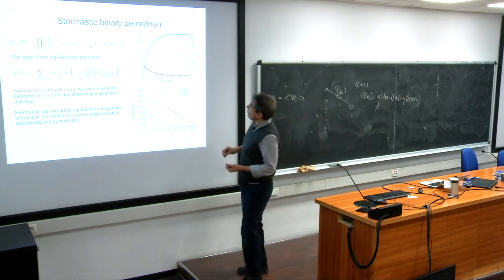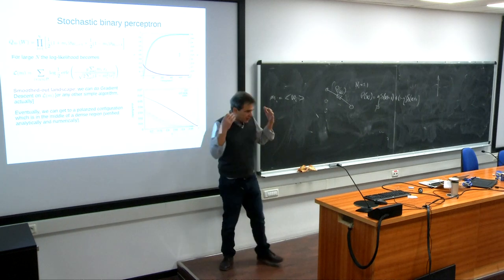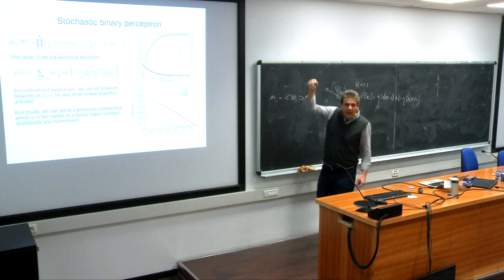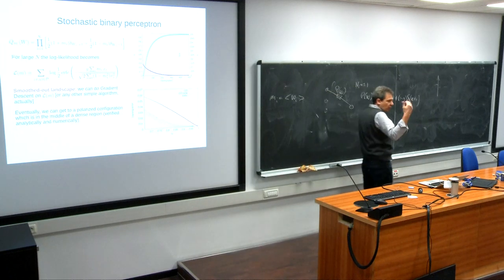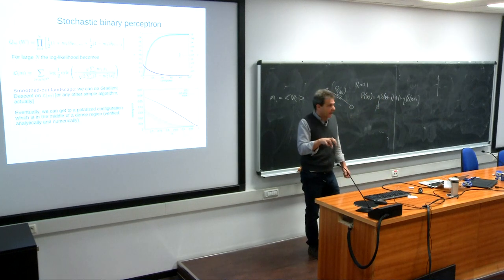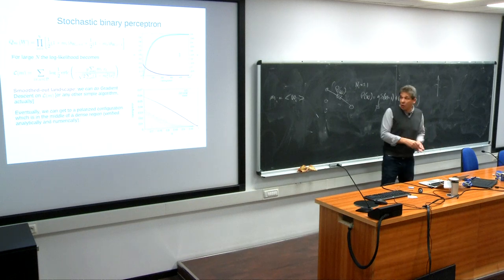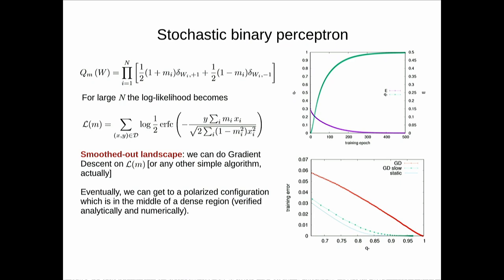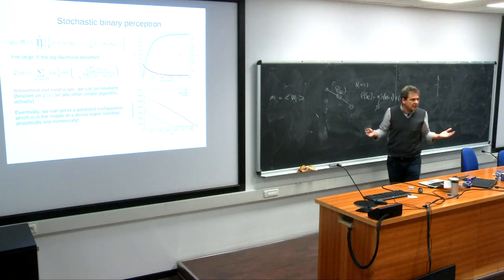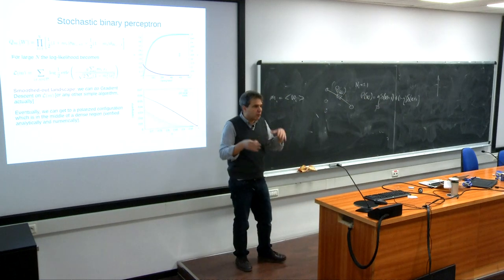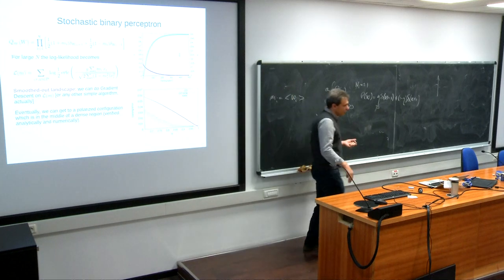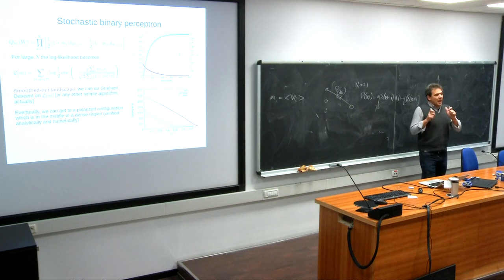If you run stochastic gradient descent or any simple stochastic process on this device, you will easily find solutions. The original binary perceptron problem is totally hard to train, but in this case it becomes easy. Why? Because if you keep the magnetization different from one — looking for solutions where weights can fluctuate — they can only fluctuate in wide flat minima. They cannot fluctuate if the minima are narrow. So if you allow synapses to fluctuate and try to train, they naturally end up in wide flat minima.